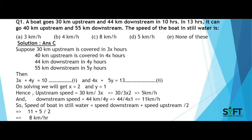Let's solve some questions based on the formulas above. Question 1: A boat goes 30 km upstream and 44 km downstream in 10 hours. In 13 hours it can go 40 km upstream and 55 km downstream. The speed of the boat in still water is — options: 3 km/hr, 4 km/hr, 8 km/hr, 5 km/hr, or none of these.